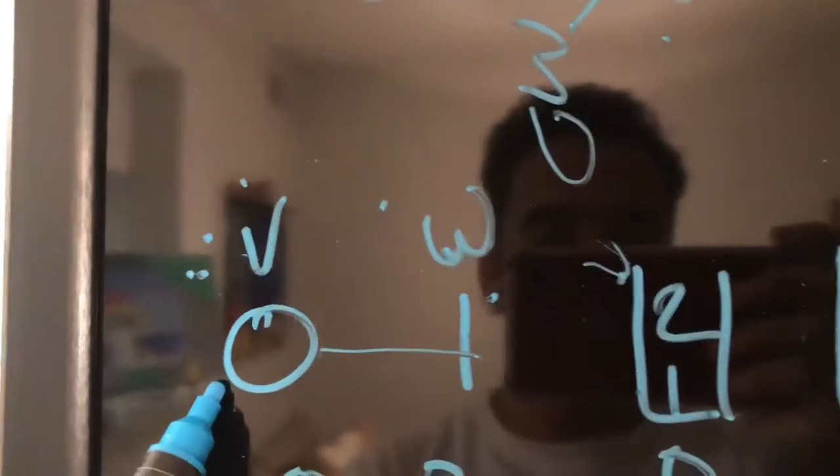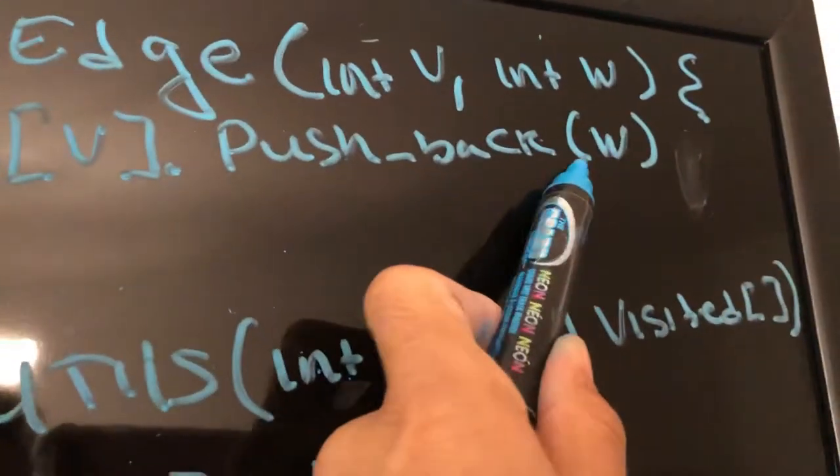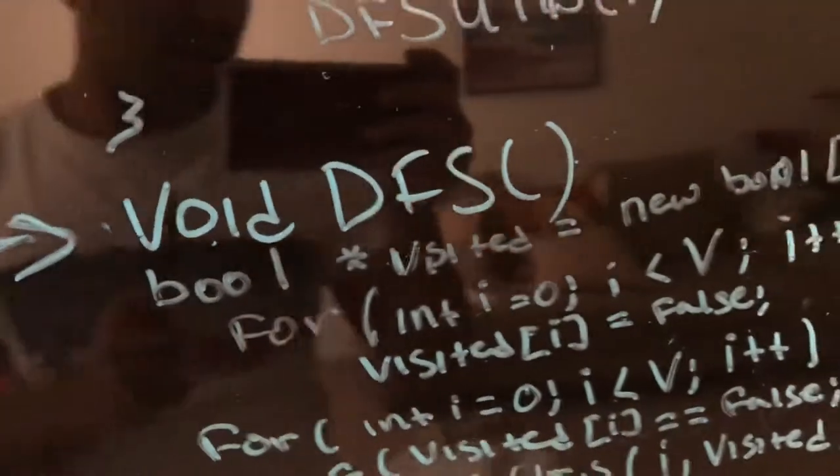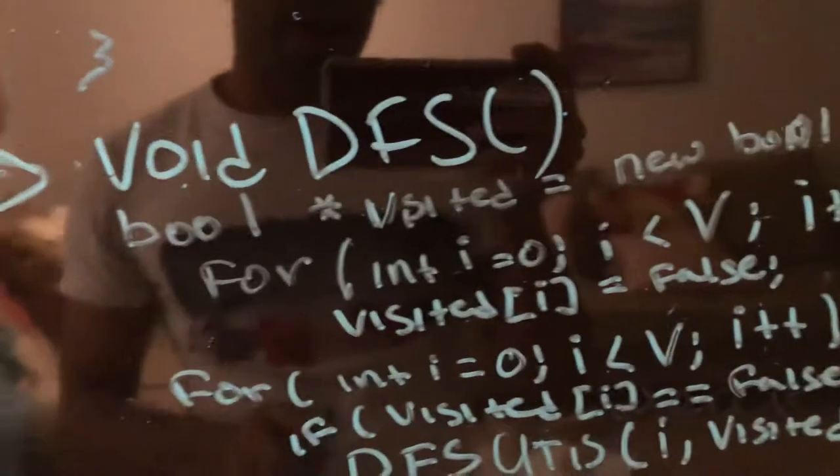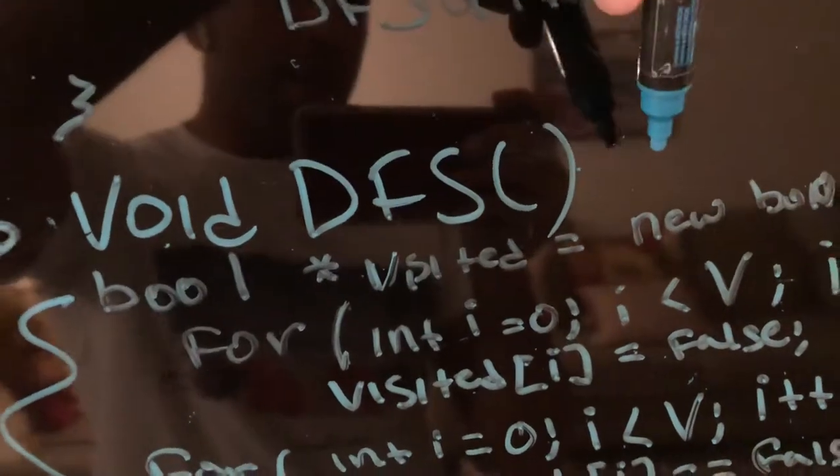So each one of these guys is going to have one of these. So you have a V, pushes back a W. Then you're going to have your function. So you have your DFS function.